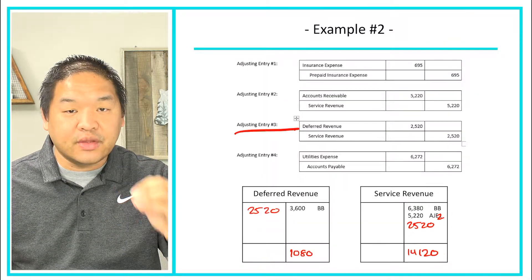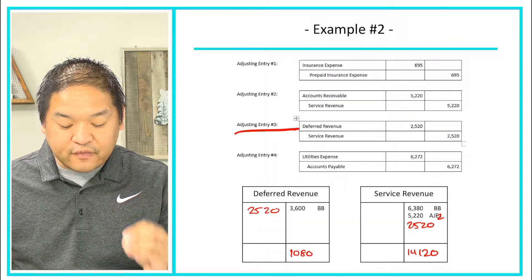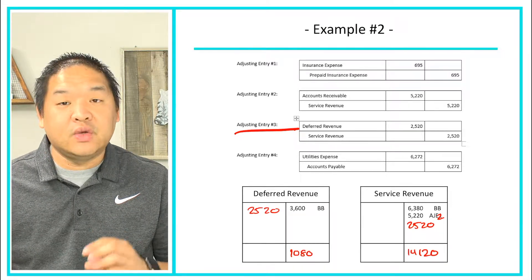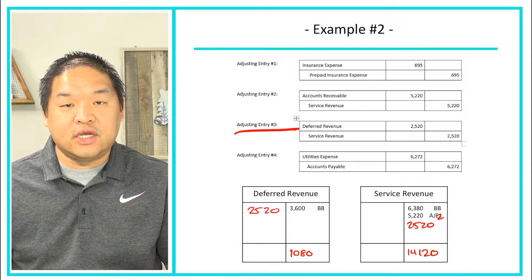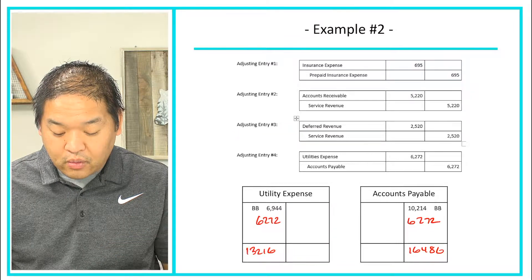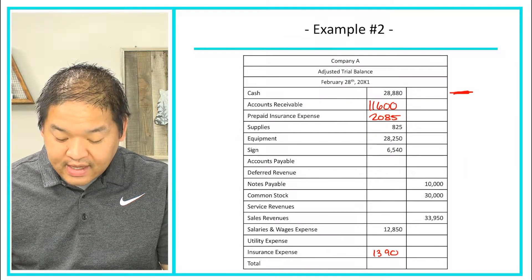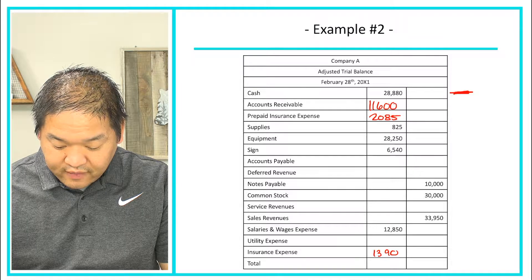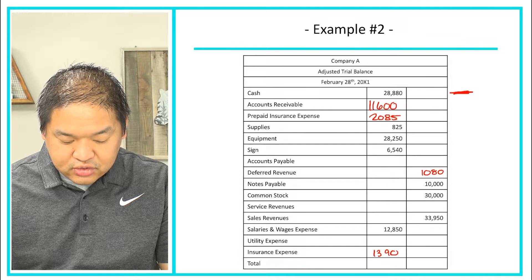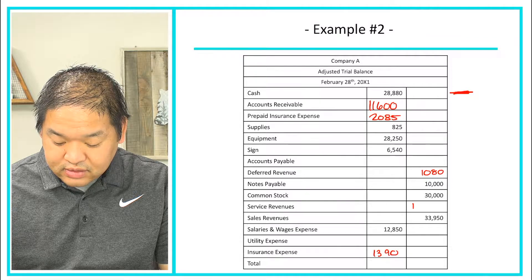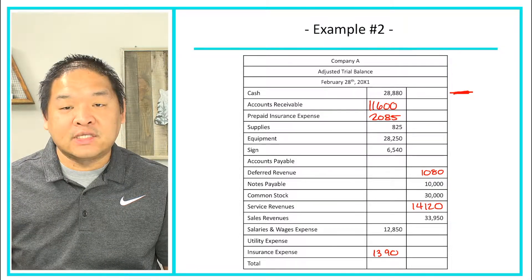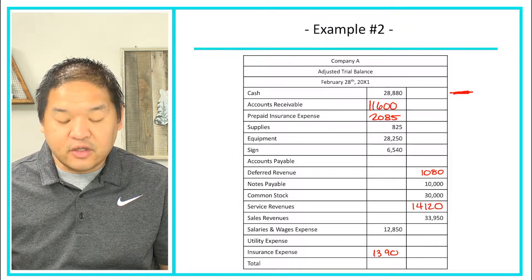Going to adjusting entry three: deferred revenue went down to $1,080 on the right-hand side, and our service revenue has now completed all adjustments at $14,120 on the right-hand side. So deferred revenue goes to $1,080 and service revenue goes to $14,120.